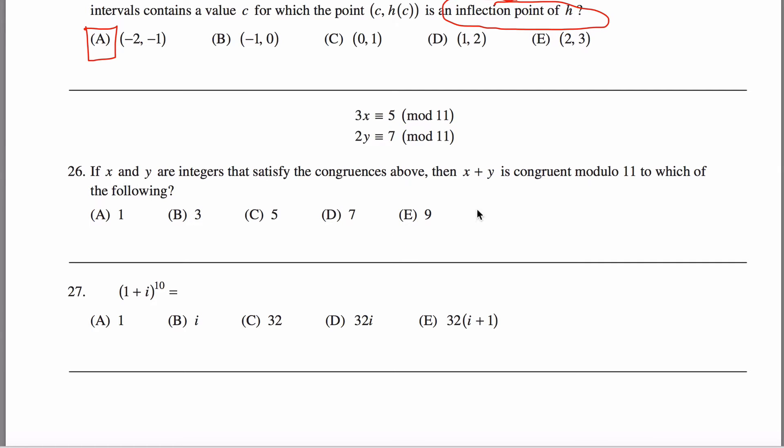All right, here are solutions to problem 26 off the GRE subject math practice exam. You're given this system of equations mod 11. 3x is equivalent to 5 mod 11 and 2y is equivalent to 7 mod 11.